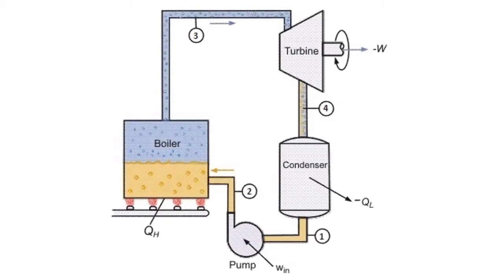The Rankine Cycle consists of four stages, as shown by this diagram. In Stage 1, we have saturated water going through a pump. This pump then leads the water to a boiler, where we have heat addition. This heat addition converts the water into steam, which is then sent through a turbine where we produce our work.